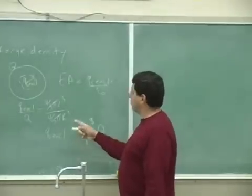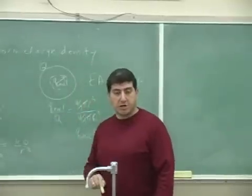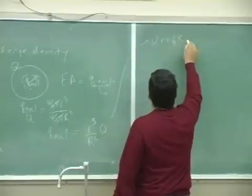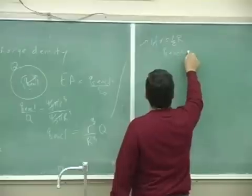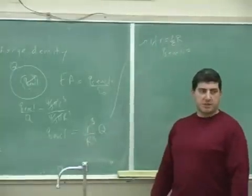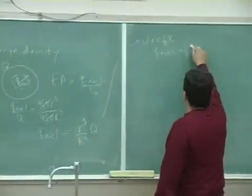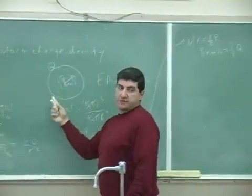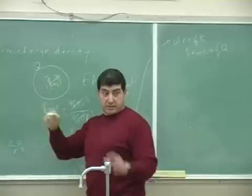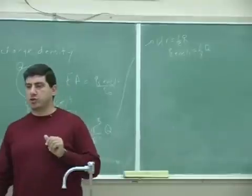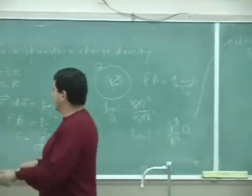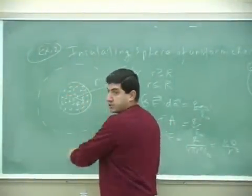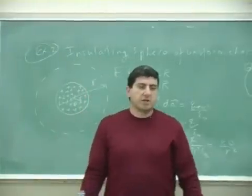For example, if little r is half of big R, then Q enclosed is one-half cubed, which is one-eighth of the total charge. So if you're at half the radius, you only enclose one-eighth of the charge — because there's much more volume on the outside. That's the geometry of a sphere.